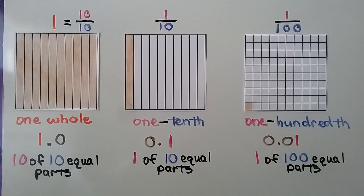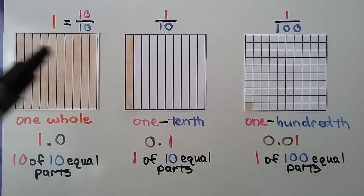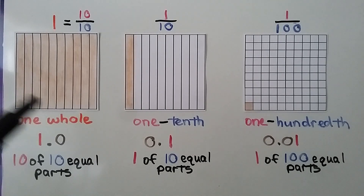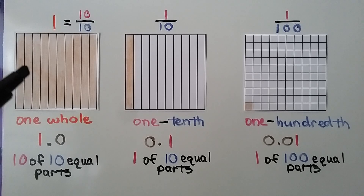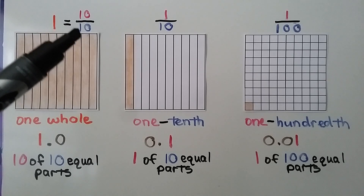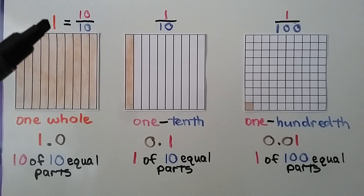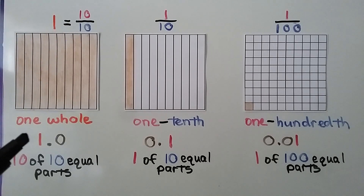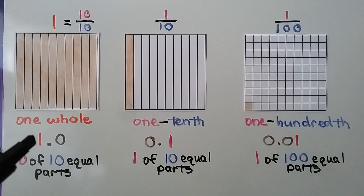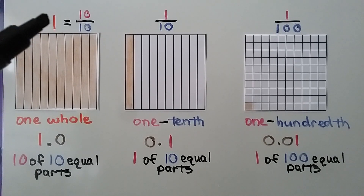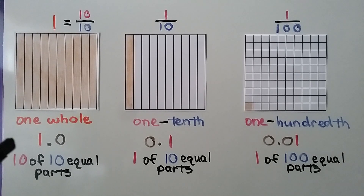Here we have one whole model that is shaded. There are ten equal parts and all ten are shaded — that's ten-tenths, equal to one whole. We can write it as one and zero-tenths, or we can just write it as a one.